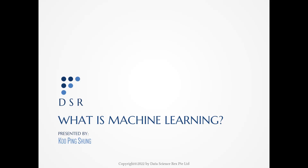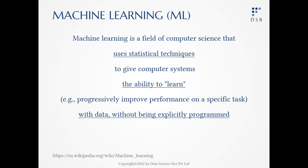So what is machine learning? Machine learning is a field of computer science that uses statistical techniques such as regression, decision trees, etc., to give the computer system the ability to learn with data without being explicitly programmed. However, this definition is not explicit in sharing what the machine actually learned, so let me share in more depth.